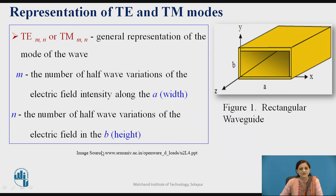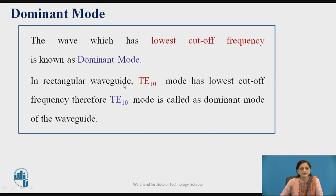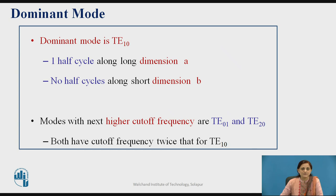Now representing the TE mode: consider the rectangular waveguide where the width is placed along the x-axis and the height along the y-axis with dimension B and dimension A. The TE mode is defined with subscript MN, where M is the number of half-wave variations of the electric field intensity along the width A, and N is the number of half-wave variations along the height B direction. The dominant mode is the wave that has the lowest cut-off frequency and the greatest wavelength. In the rectangular waveguide, the TE10 mode has the lowest cut-off frequency, and therefore TE10 is called the dominant mode — one half-cycle variation along dimension A and no variation along the short dimension B.